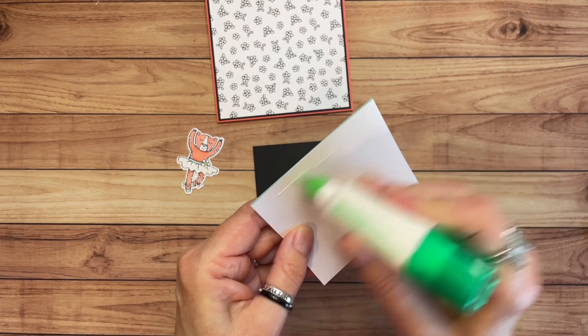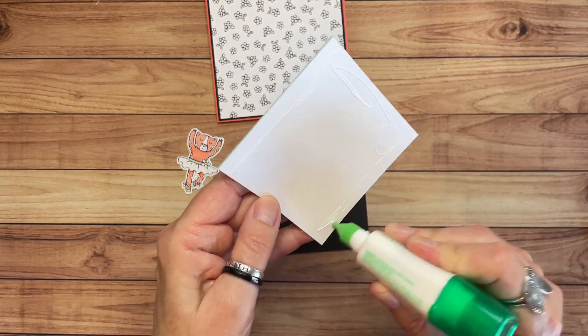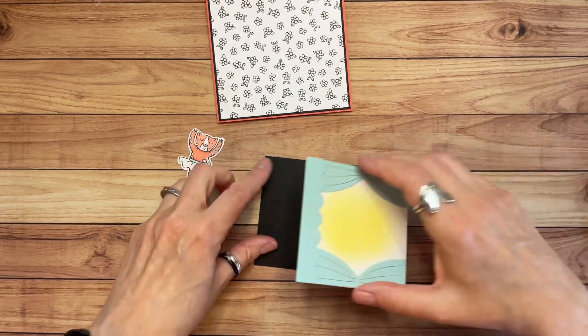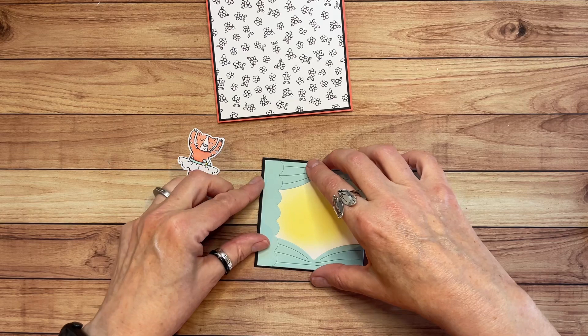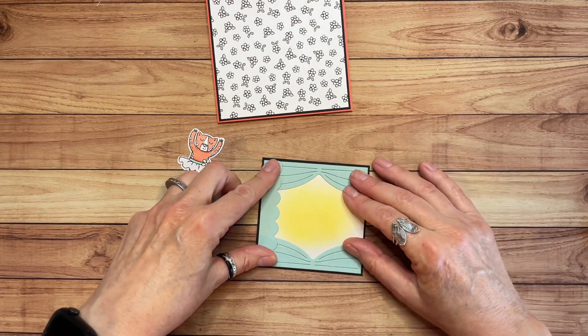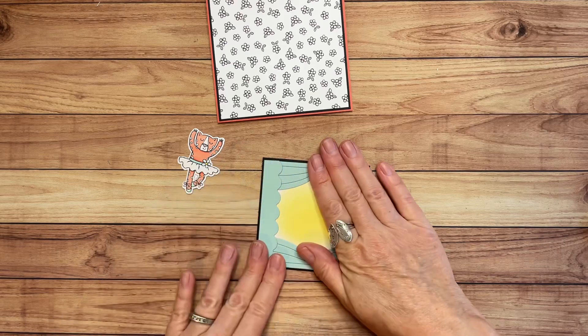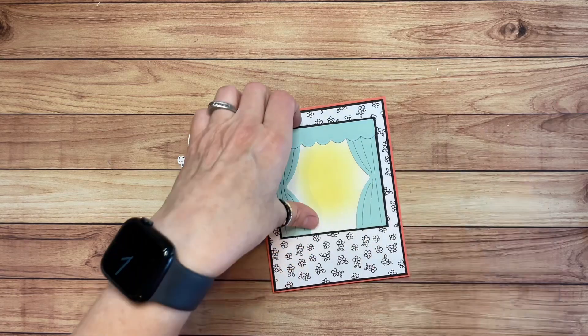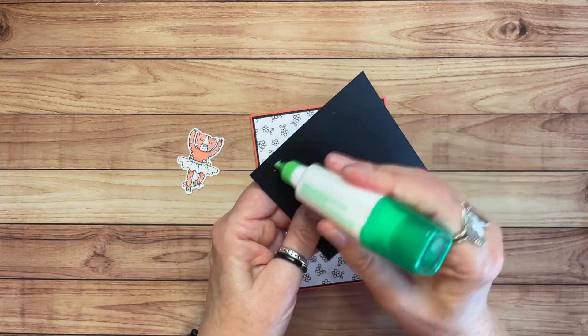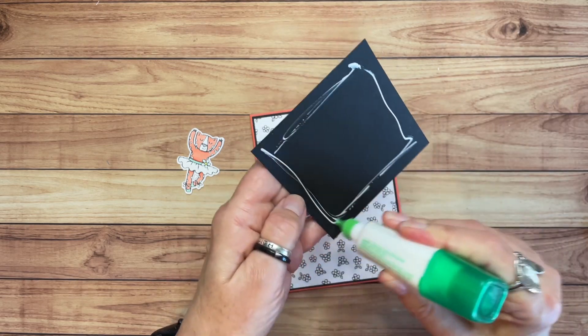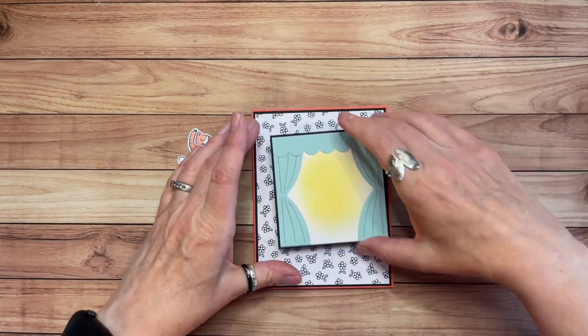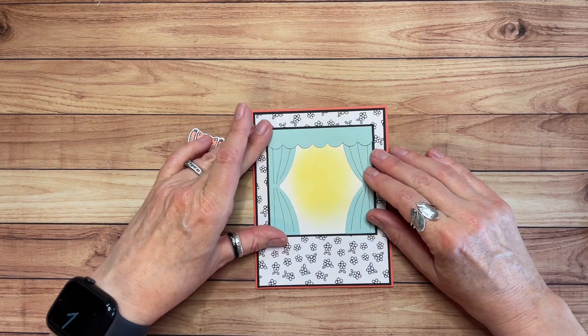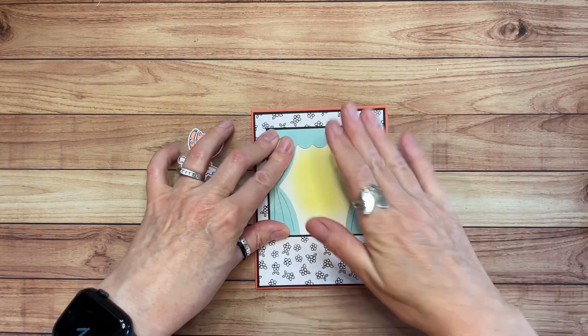Now we can attach this to that piece of basic black. It's always dangerous for me to do a card that has a lot of pieces because I'm bound to lose something. So I'm happy so far we've made it through and I haven't lost anything yet. So that's great.